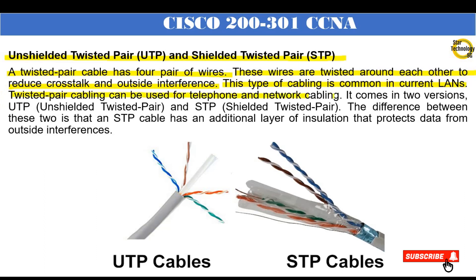Twisted pair cabling can be used for telephone and network cabling. It comes in two versions: UTP (unshielded twisted pair) and STP (shielded twisted pair). The difference between these two is that an STP cable has an additional layer of insulation that protects data from outside interference. Each pair of wires is twisted with each other to reduce crosstalk and outside interference. STP cable has an additional layer of insulation that protects data from outside interference.